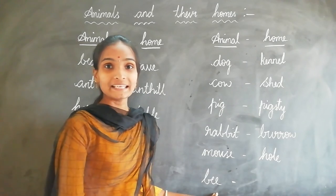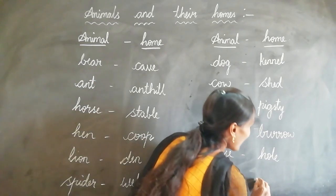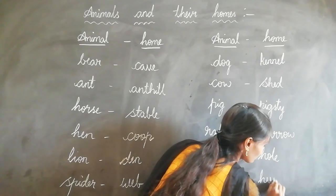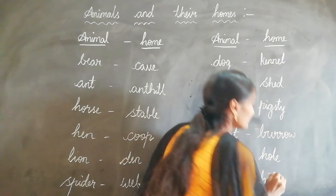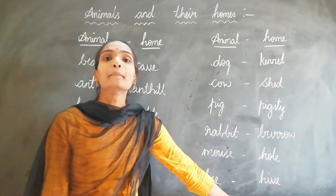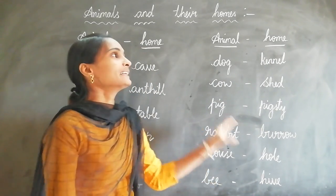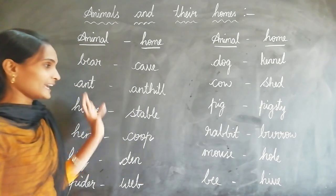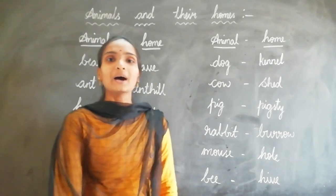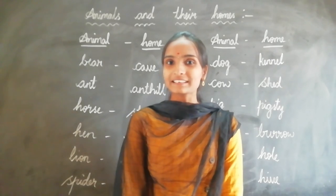Next, bee. The home of the bee is a beehive. The bee lives in a beehive. Okay, children, these are the animals and their homes. Thank you, children.